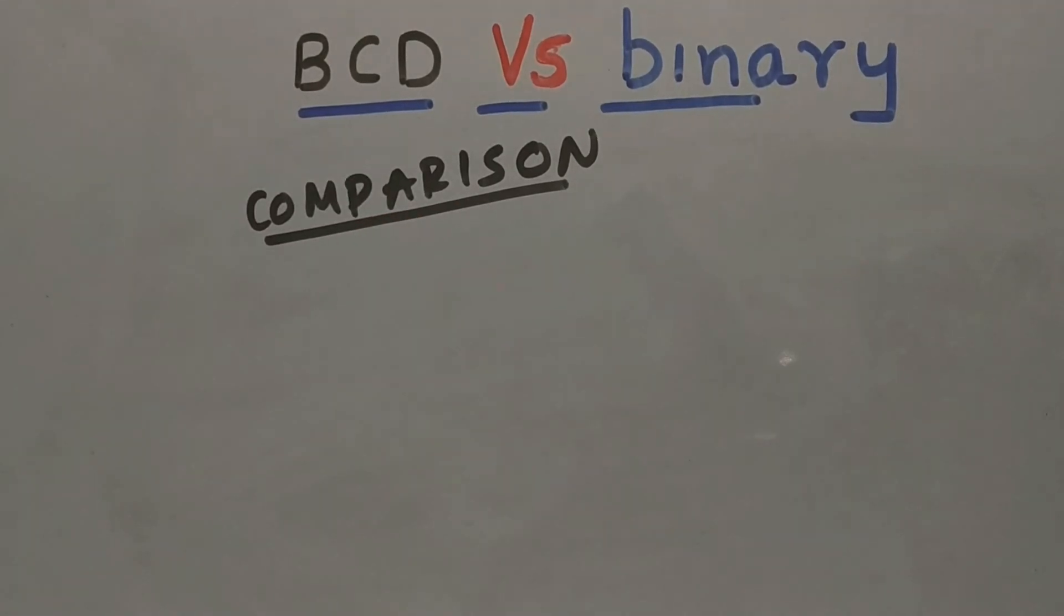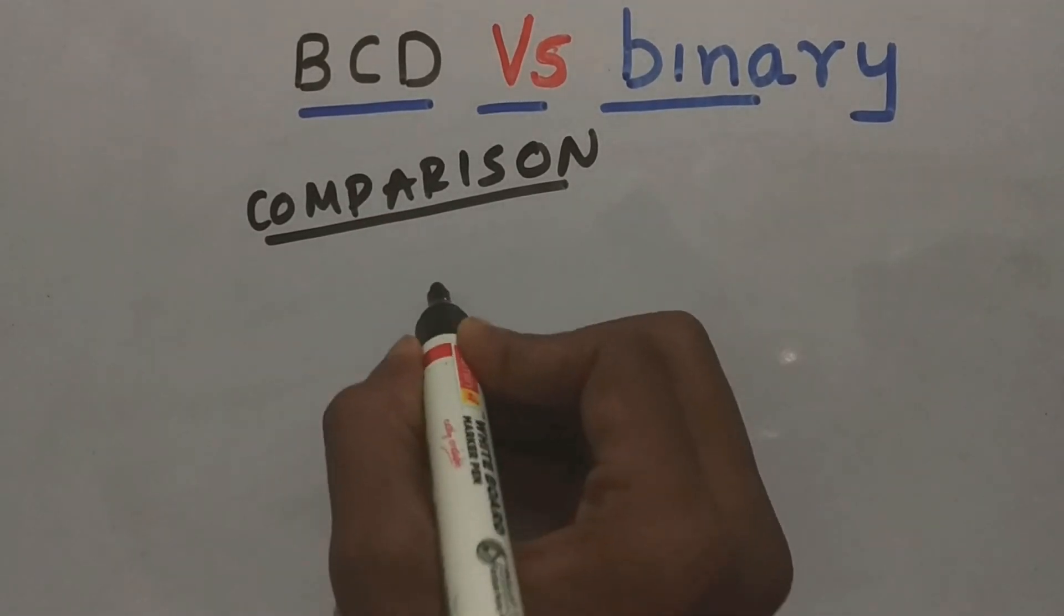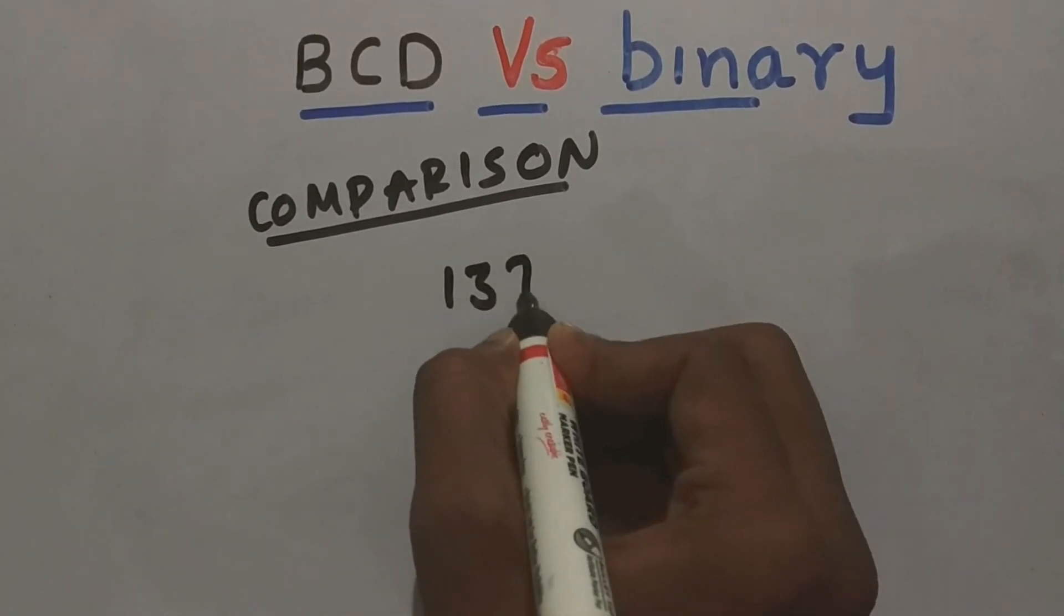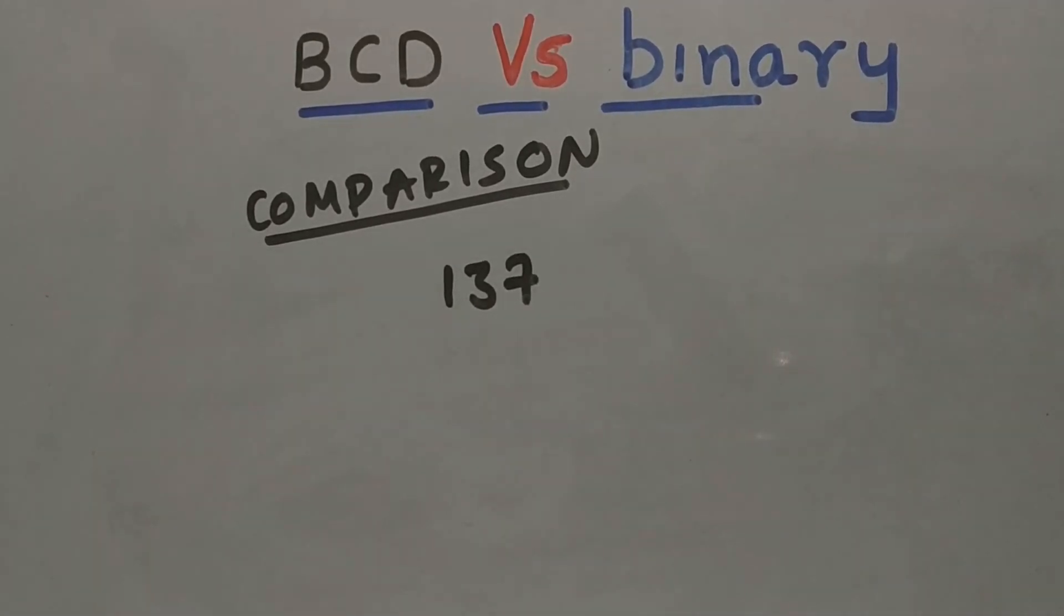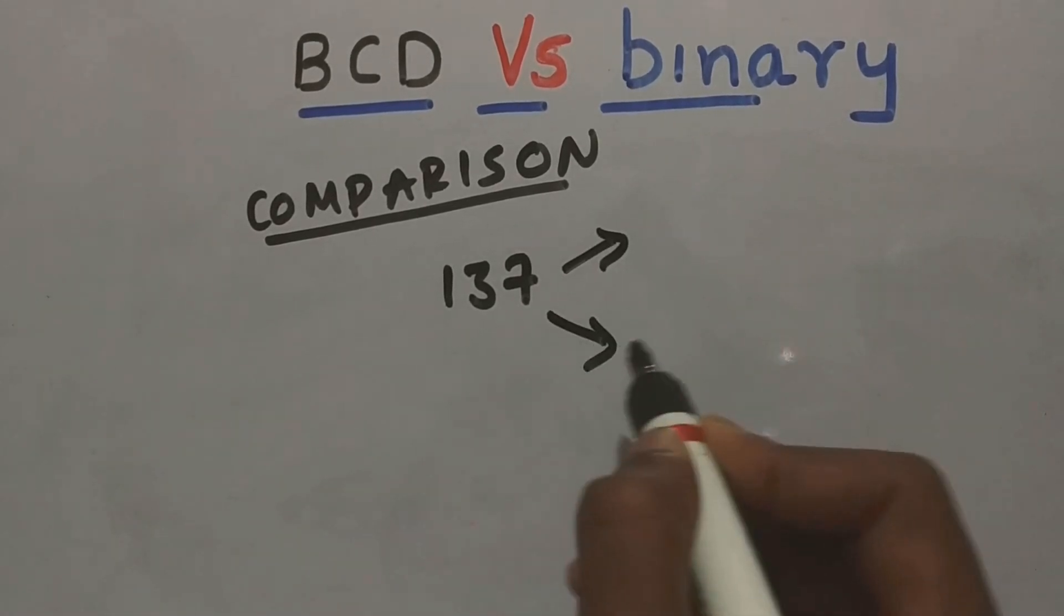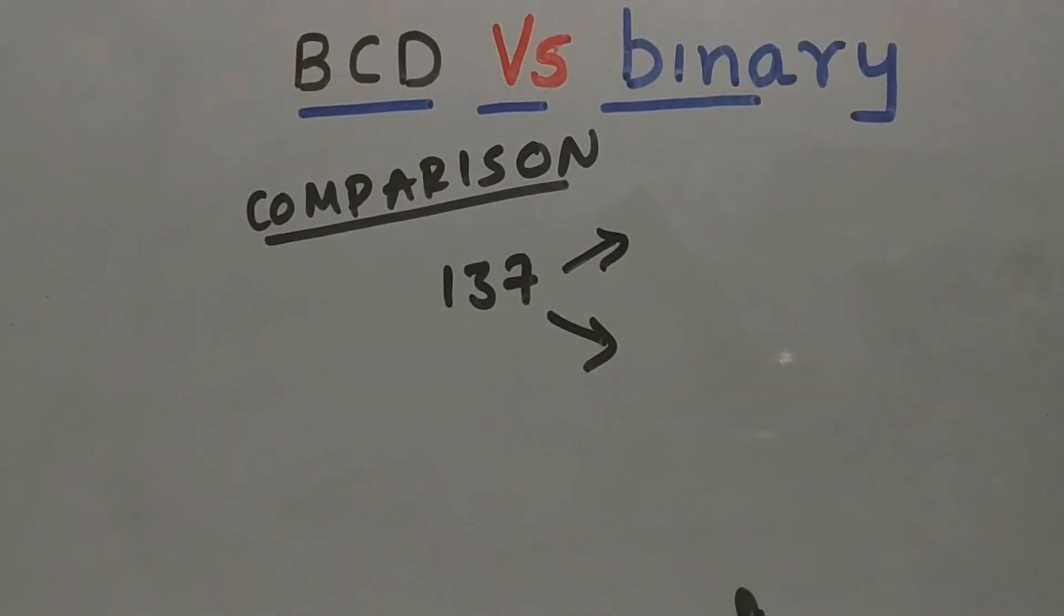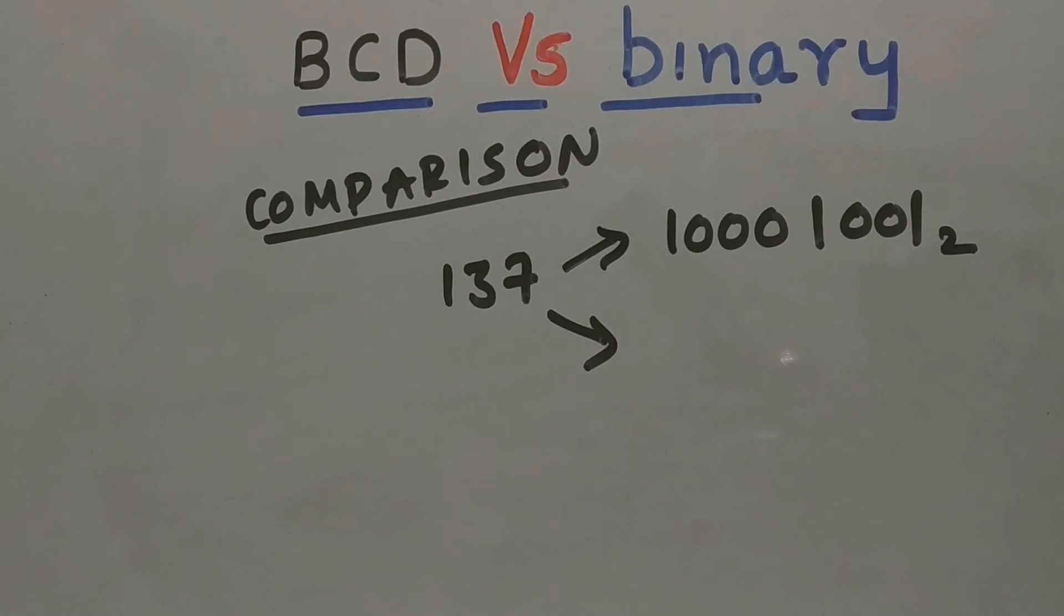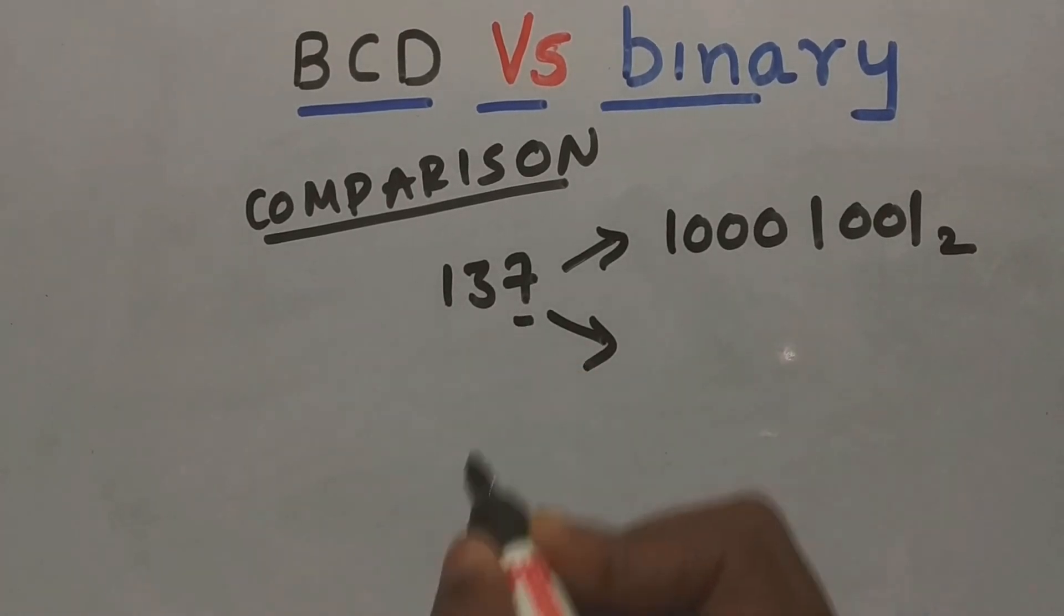Let us take an example and consider 137 as a decimal number and how we will represent it in binary and BCD. In binary, it is represented as 10001001. But whereas in BCD, every digit is having a 4-bit value code.